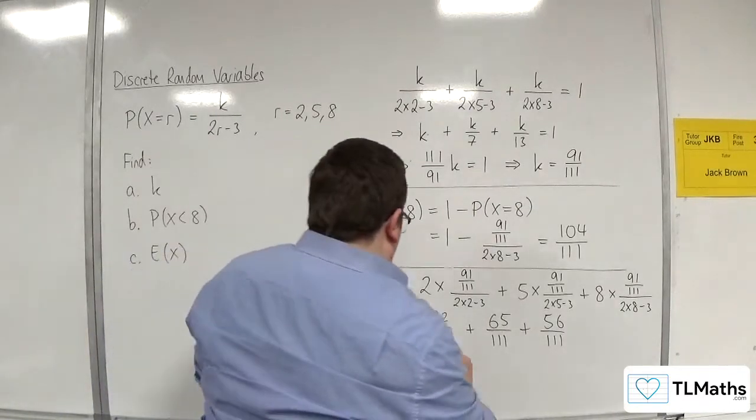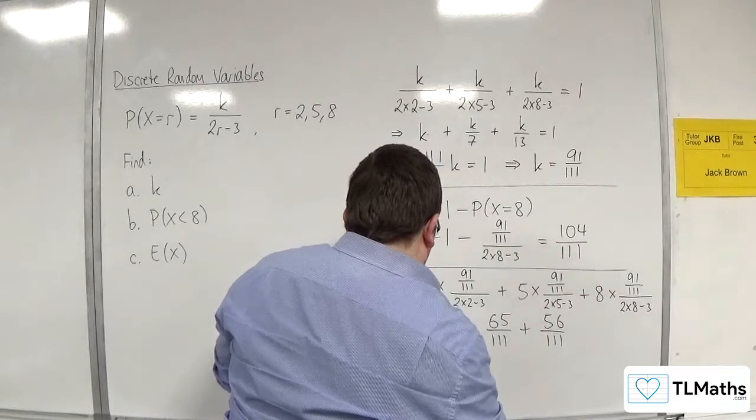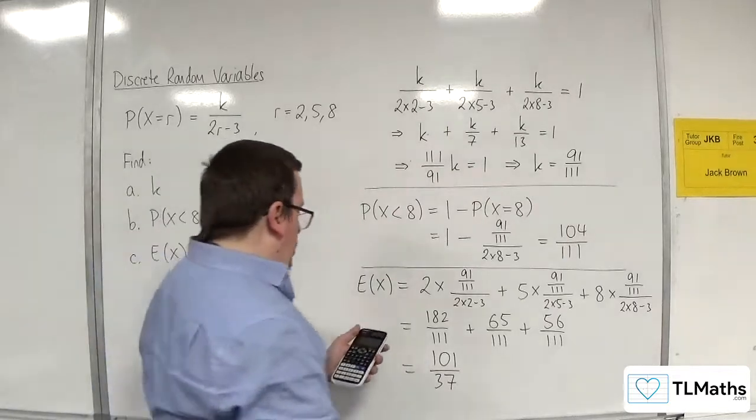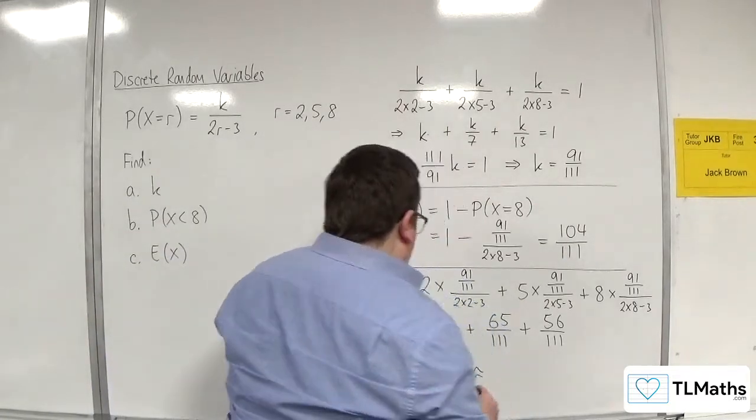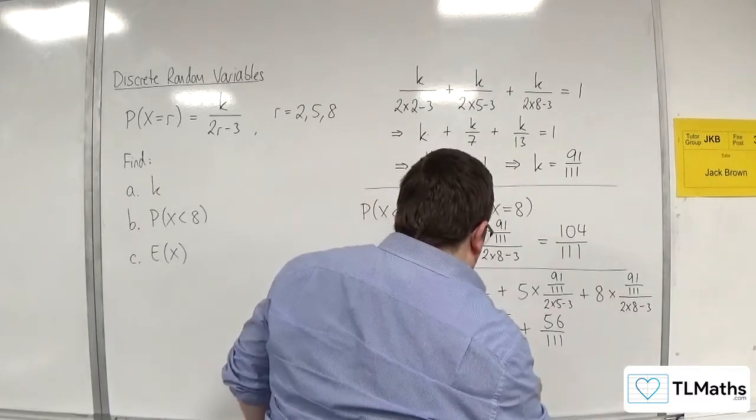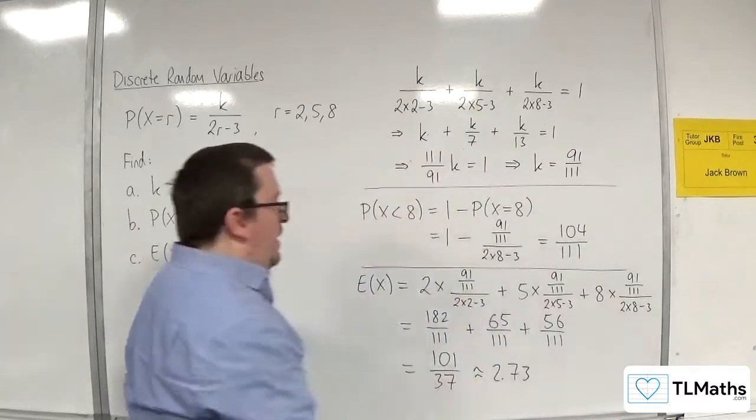And we get 101 over 37. OK, which, you know, press the SD button. Let's just have a look at what that is. That's about 2.73.